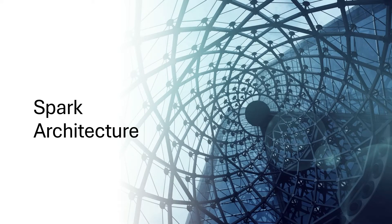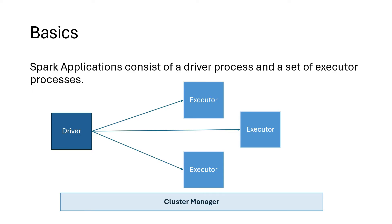Now let's talk about Spark architecture and each of the things you need to know to understand Spark. When we talk about any Spark application, what would it consist of? It would have a driver and a bunch of executors — these are all processes running on some VM or some machine. You can think of the driver as the brain or the heart which is driving the whole execution, while the executors are a cluster of machines or VMs that are actually doing the work. We would also have a cluster manager which manages this entire execution.